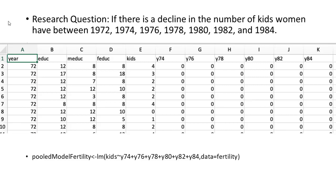When I combine data records from different years into one data set, I want to create dummy variables for the time spots, as you can see on this slide. If the data record was collected in 1974, I will give value 1 to the dummy variable Y74. If the data record was not from 1974 — it was from other years — I will give value 0 to the dummy variable Y74.